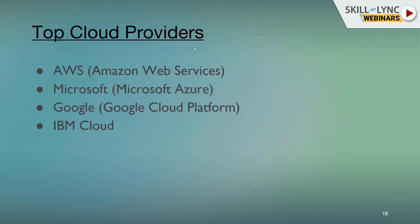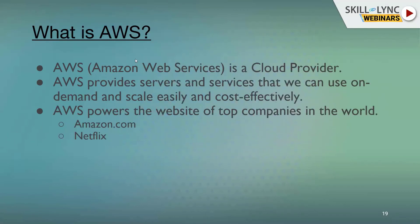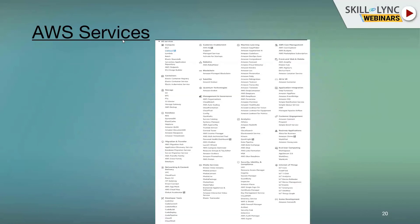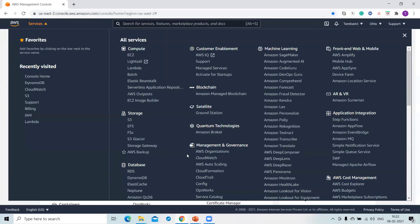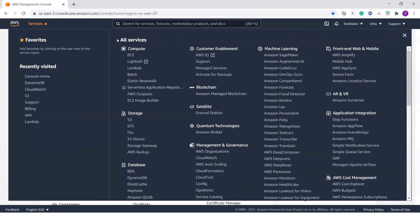The top cloud providers are: Amazon providing AWS (Amazon Web Services), Microsoft providing Azure, Google providing Google Cloud Platform, and IBM Cloud, among others. We are going to see a brief introduction about AWS. AWS is a cloud provider that offers servers and services on demand, easily scalable and cost-effective. AWS powers the websites of top companies such as Amazon.com and Netflix.